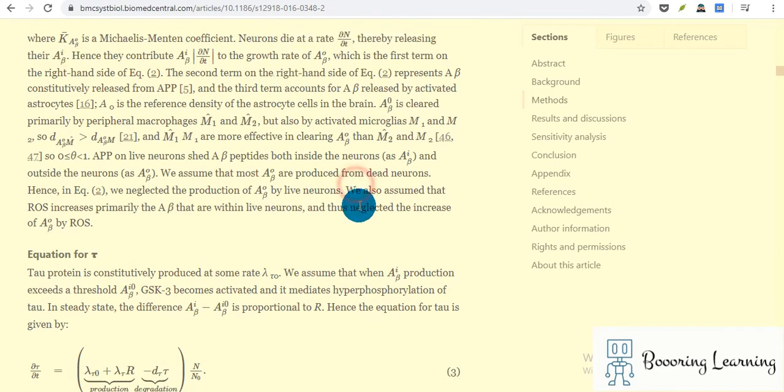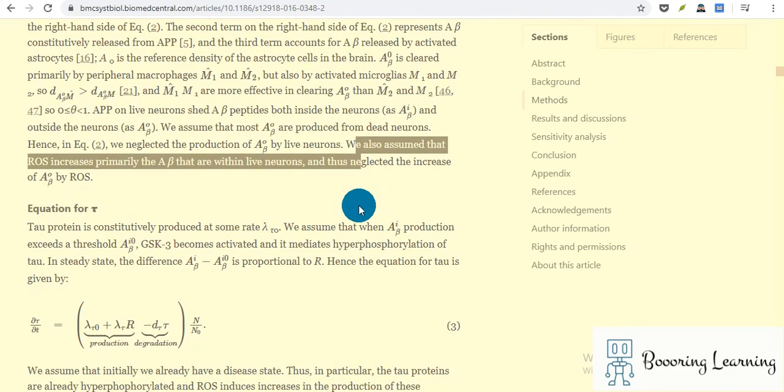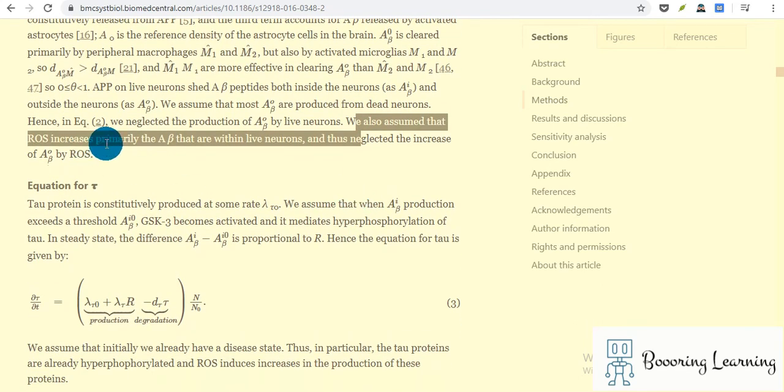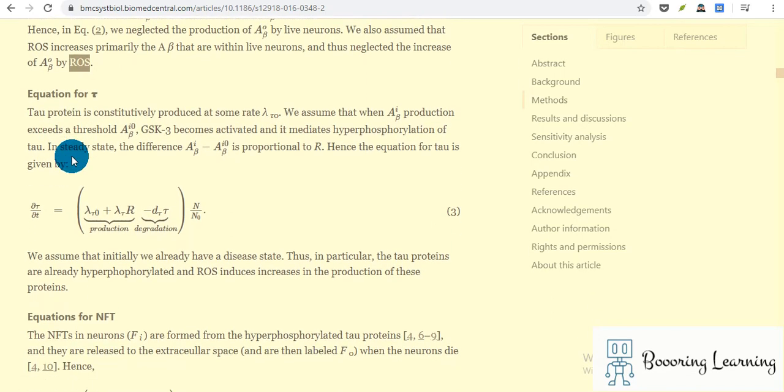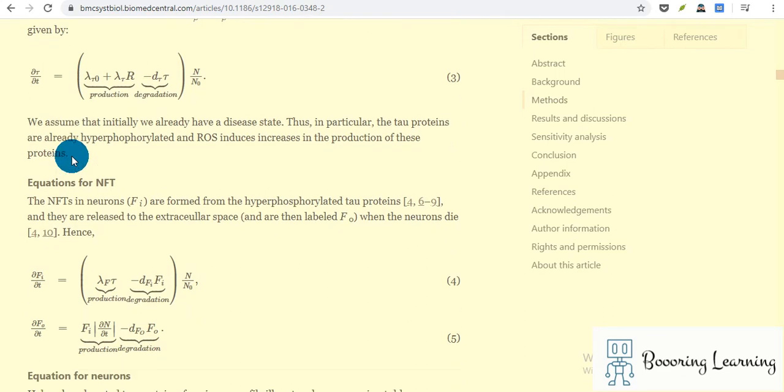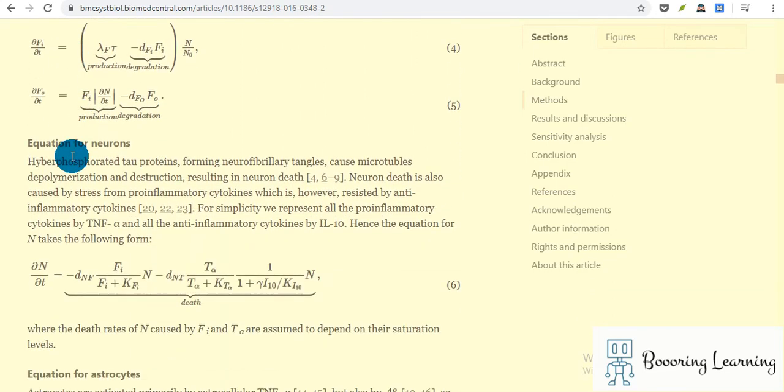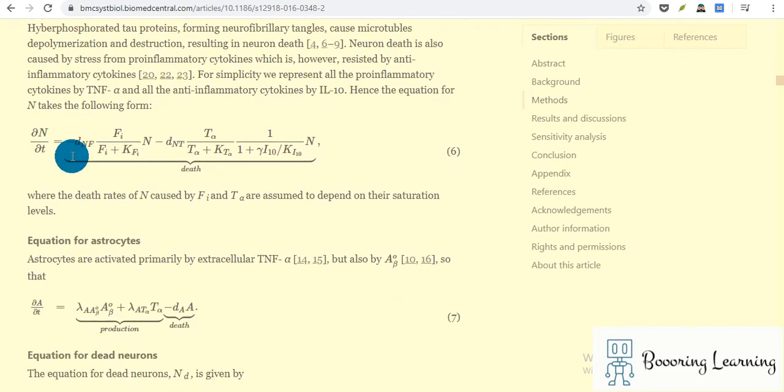They also assume that the ROS increases. Oxidative stress increases primarily the A-beta that are within live neurons, and thus neglected the increase by oxidative stress. And then they show with the equations.